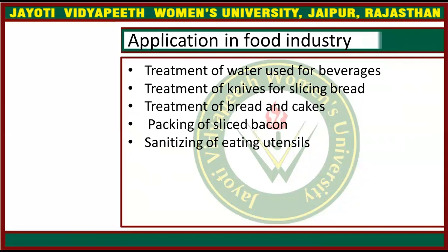Now we have studied the radiation method in the application of the food industry. First, you have beverages — drinking food drinks, which includes fruit drinks and alcoholic beverages. Whatever you have in liquid form for drinking, that is beverages. Radiation is applied to the water used in those beverages. We apply the radiation method to the water first, and after that, the radiated water is used in the food industry.